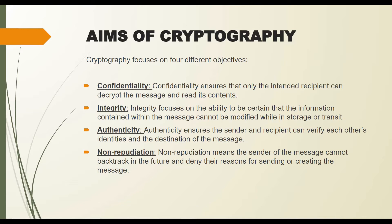Confidentiality ensures that only the intended recipient — the person we want to send the message to — can read the message and its contents. Integrity ensures that the message cannot be modified while being sent or in storage. Authenticity ensures that the sender and the recipient can verify each other's identity — if I send a message to my friend, I should know I am sending it to my friend, and my friend should know that I am the sender.